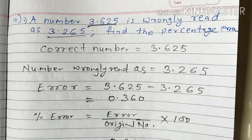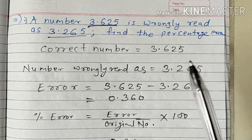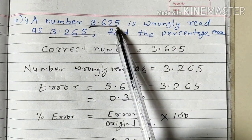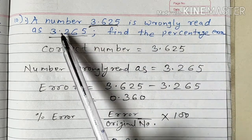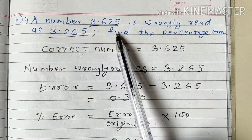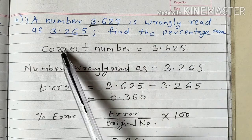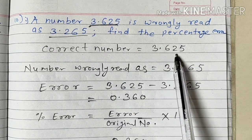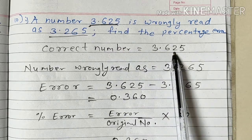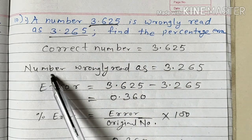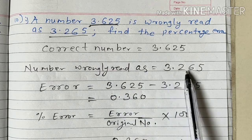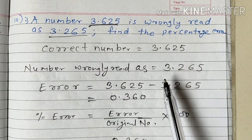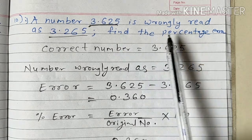Students, we are discussing question number 10, first part. The number 3.625 is wrongly read as 3.265. Find the percentage error. In this question, the correct number is 3.625, and the number wrongly read is 3.265. We want to find out the percentage error.